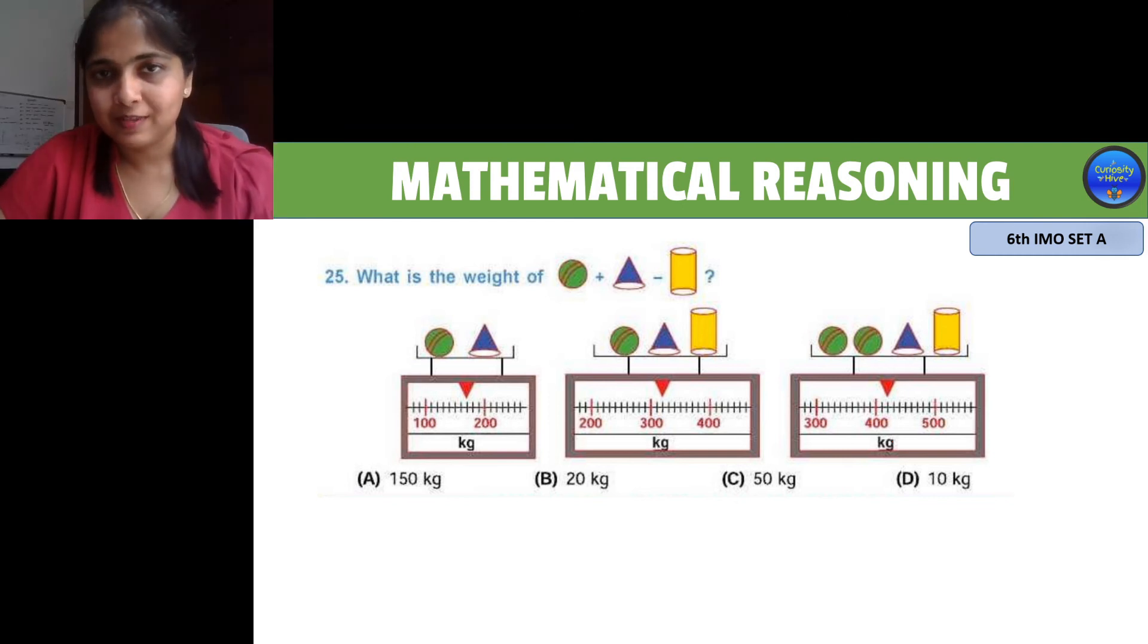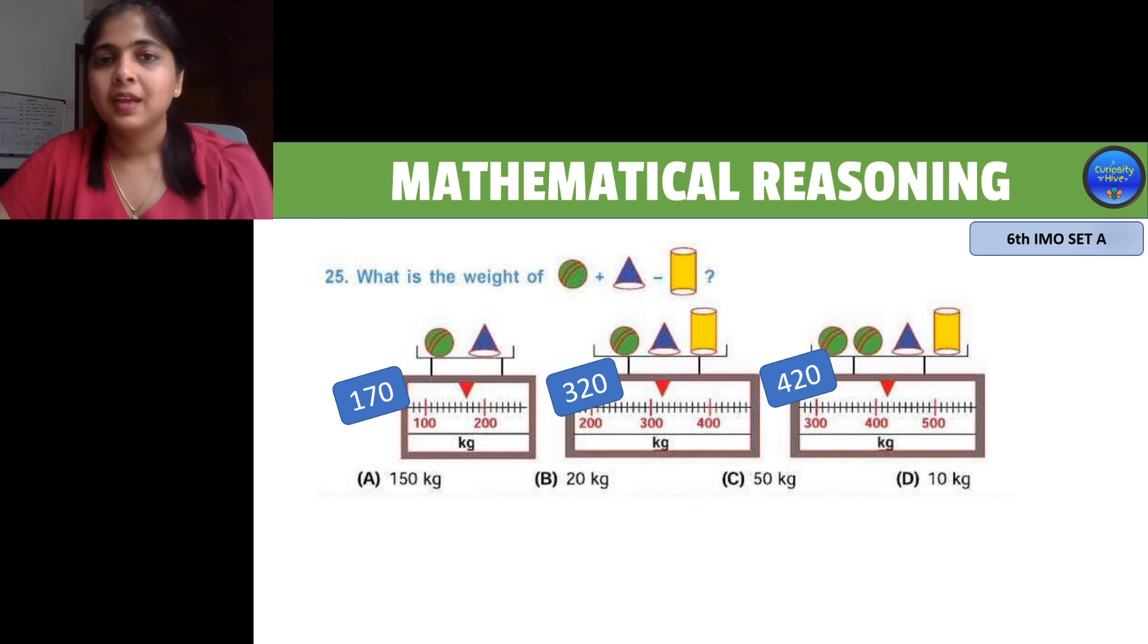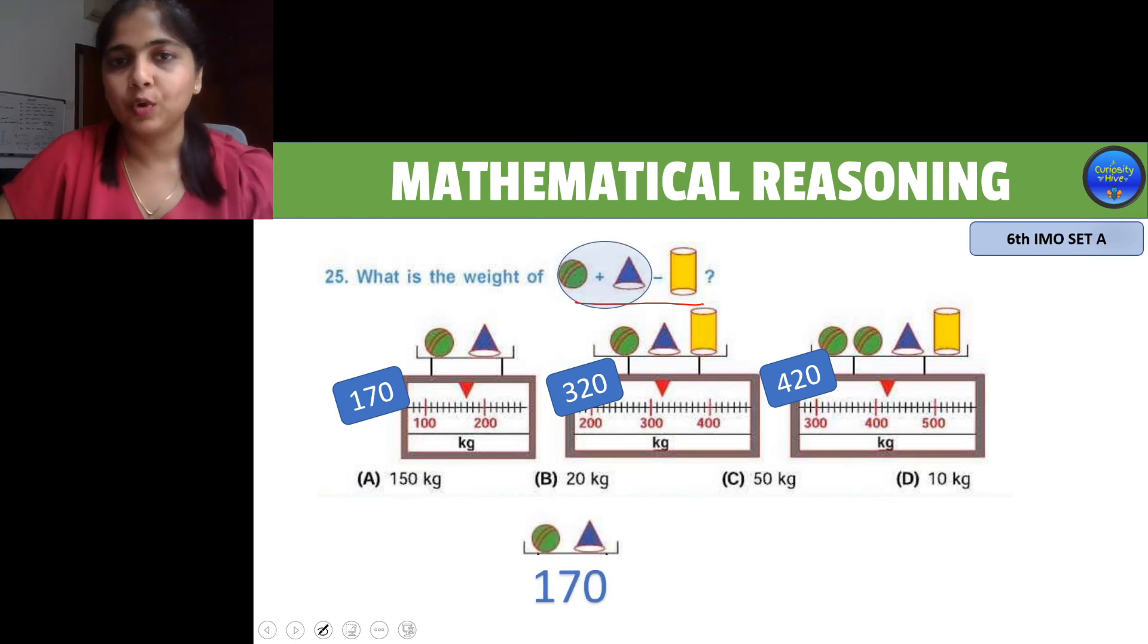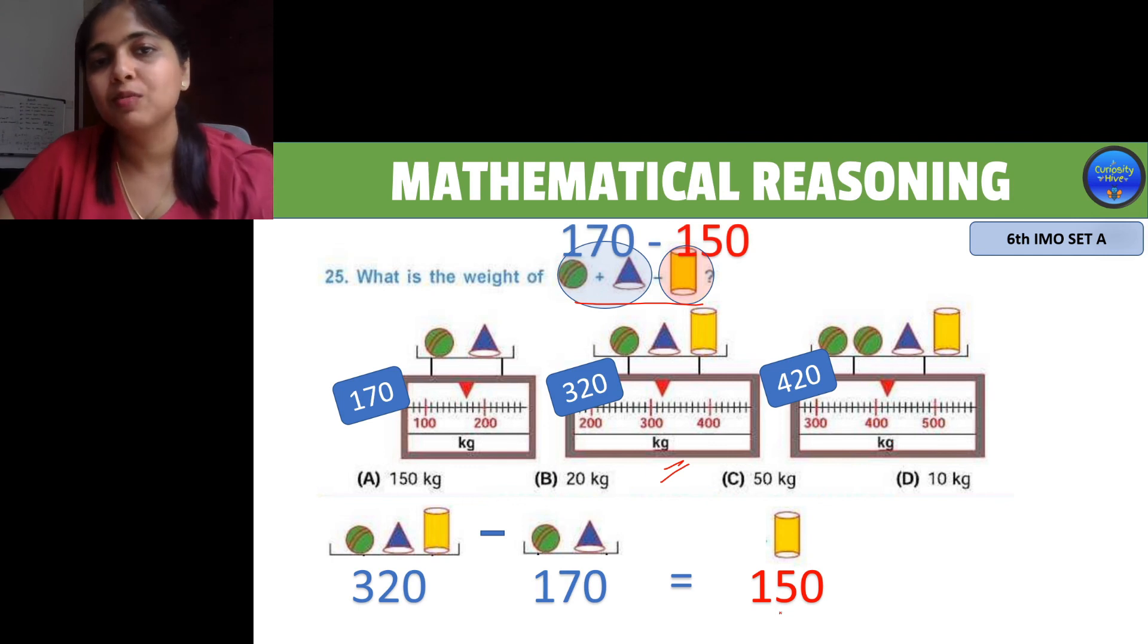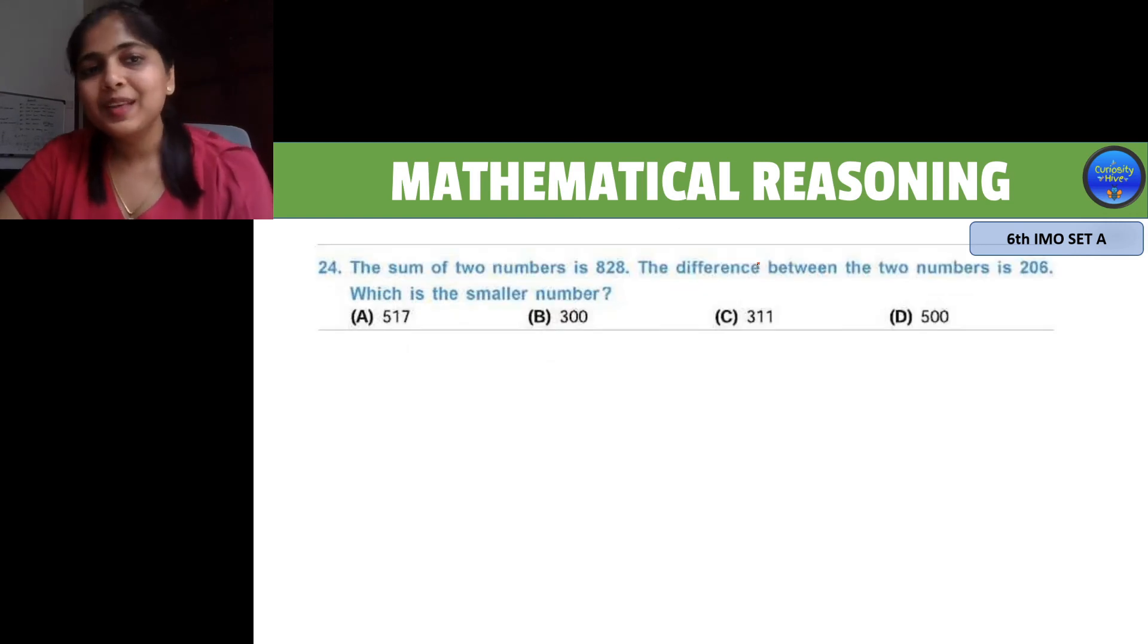Let me write the weights indicated in the scales below. We need to find this equation. We already know what is the weight of the circle and cone together, and we need to find the weight of the cylinder. The second balance shows the sum of the weight of the cylinder, cone, and sphere. If we subtract the weight of the sphere and cone, we get the weight of the cylinder, which will be 320 minus 170, which is 150. Now we know the two portions: 170 minus 150, which gives us the answer of 20, which is option B.